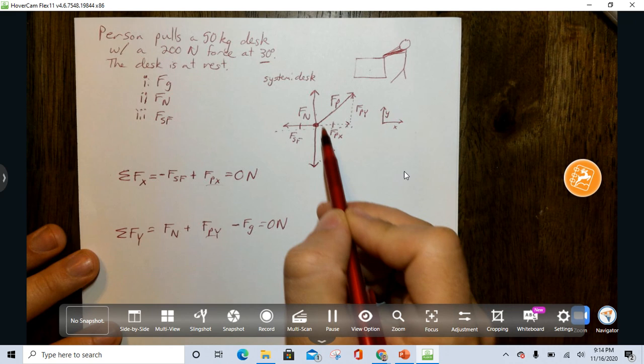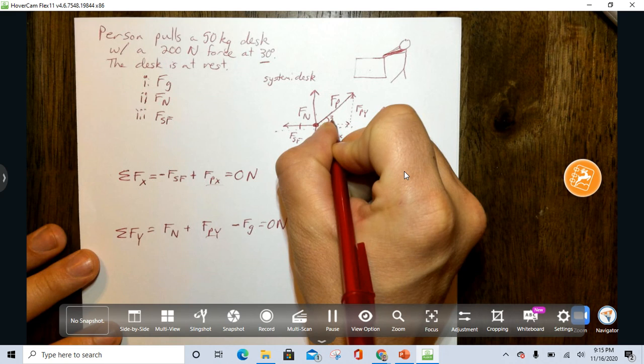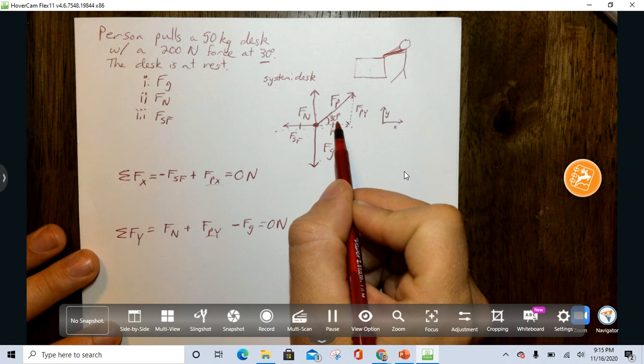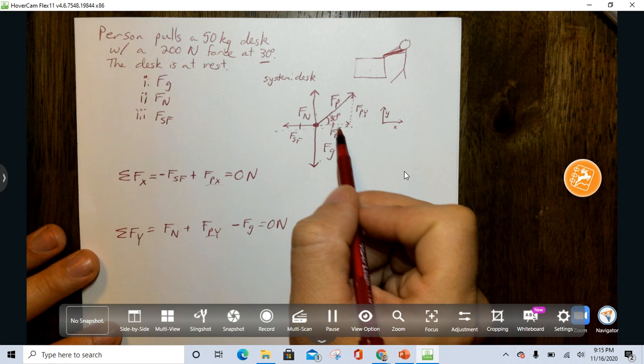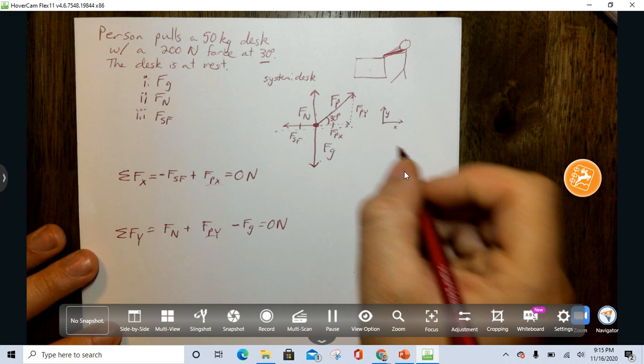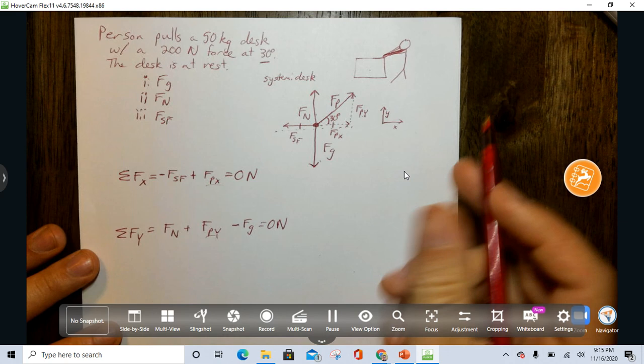Now, if we have an X component and a Y component, we need to look at this triangle right here from the problem that this is 30 degrees. Now, FPY is the opposite side of the angle, and FPX is the adjacent side to the angle. So, we're going to have to use sine and cosine to look at these.